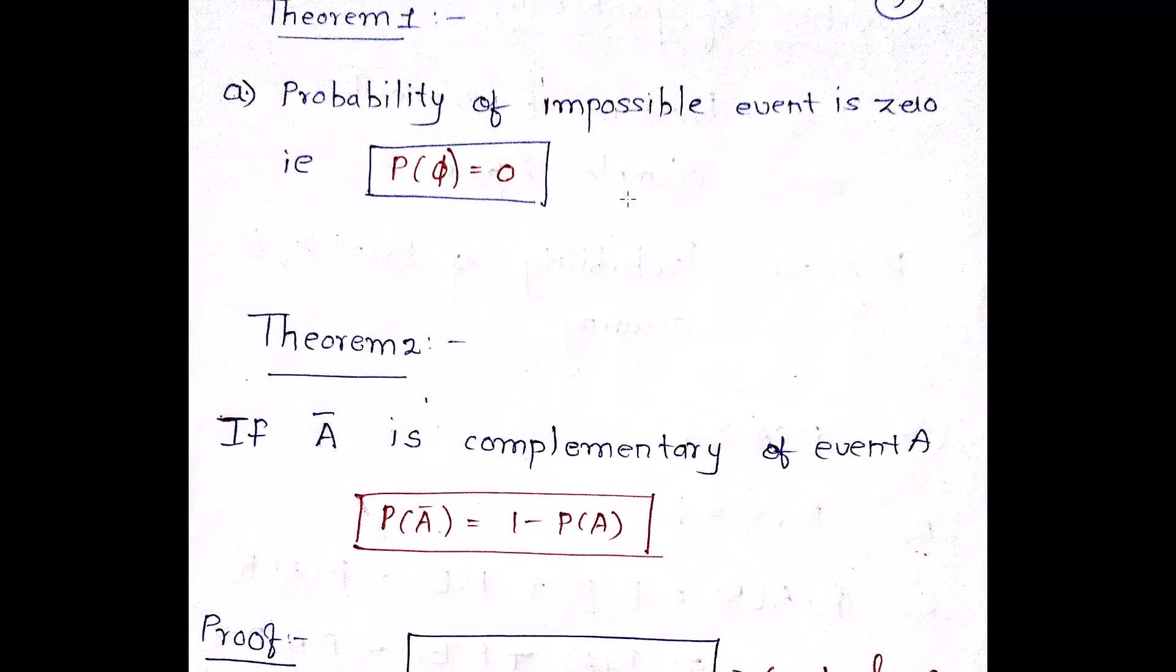You can get 1, 2, 3, 4, 5, 6. You cannot get a 7. Hence the probability is going to be zero. Therefore, the probability of an impossible event is zero. Hence, it is given in terms of expression as probability of φ, where φ stands for impossible event as zero.